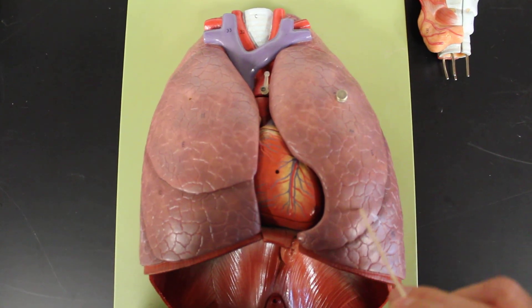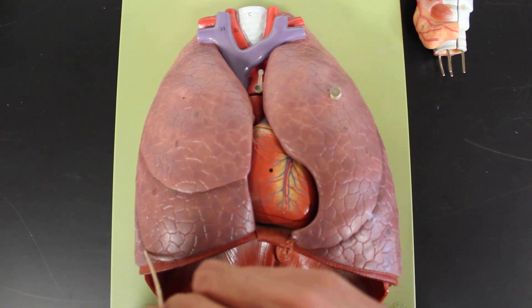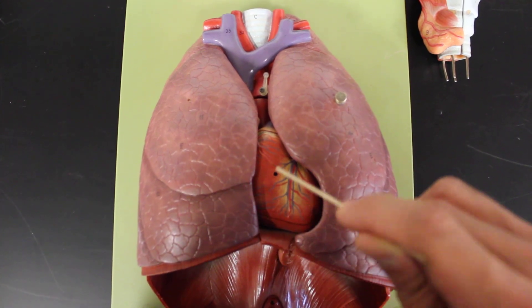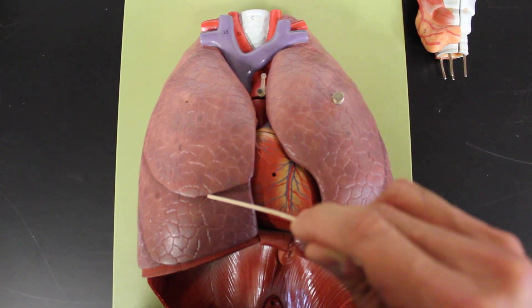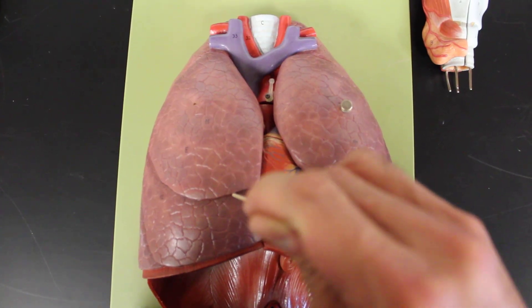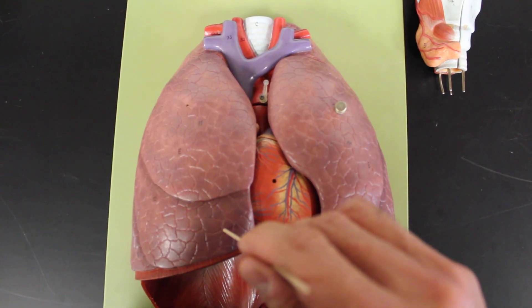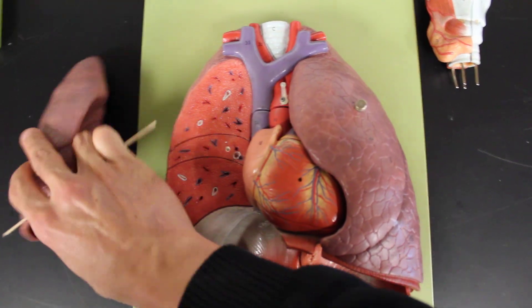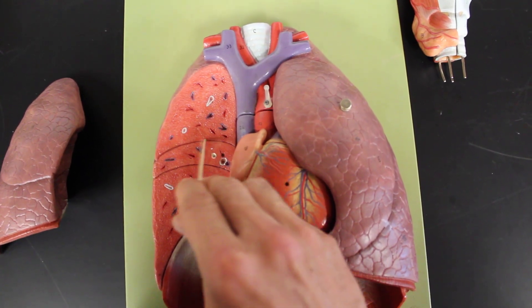Both lungs have oblique fissures, cutting and separating out between the inferior and superior lobe. But then the middle lobe gets this extra, or the right lung gets this horizontal fissure, helping to denote the middle lobe. So we have all these different lobes. And if we kind of continue to pull them aside, we can actually see the continuation of these kind of fissures here.